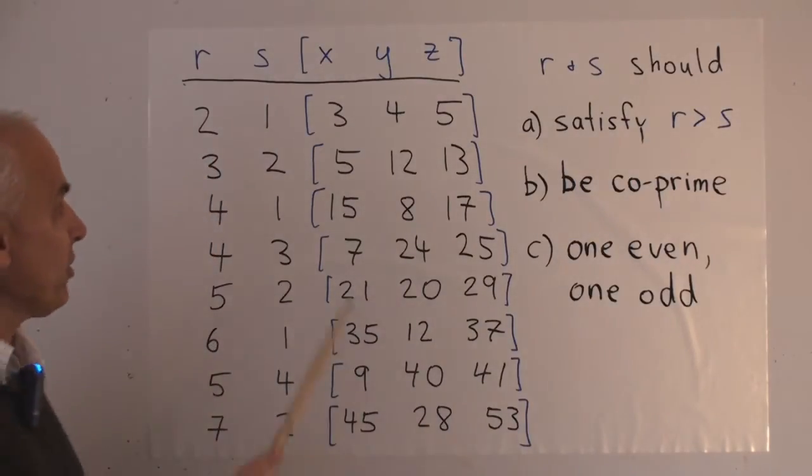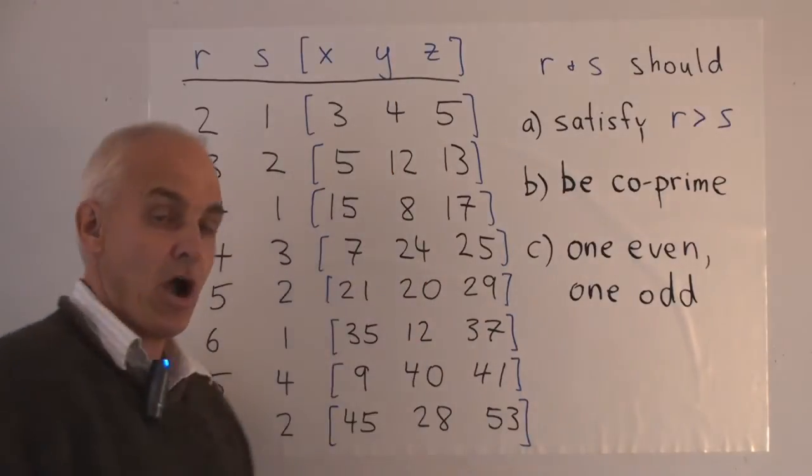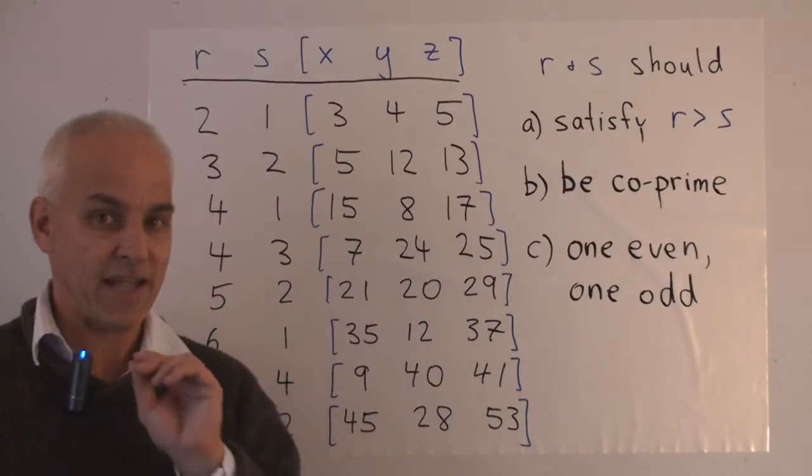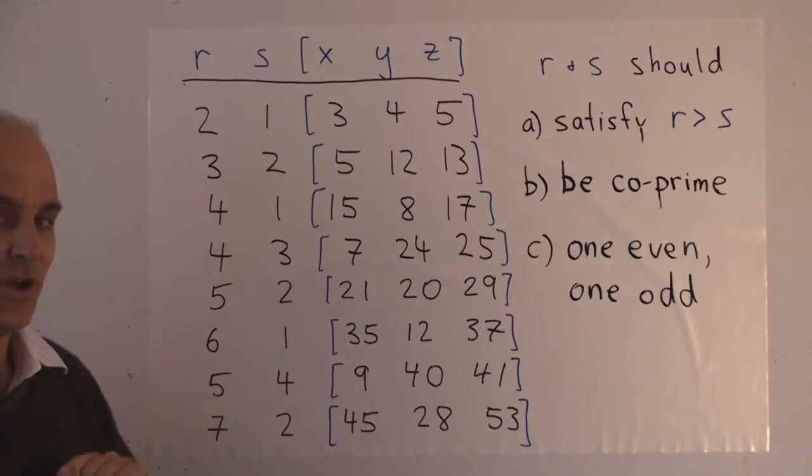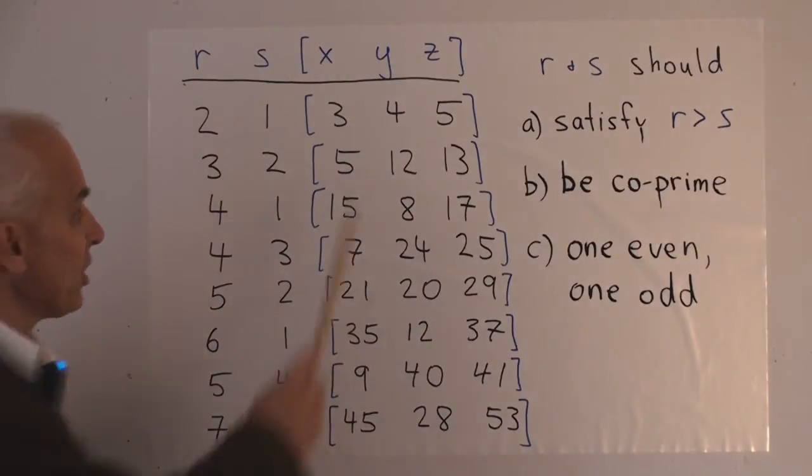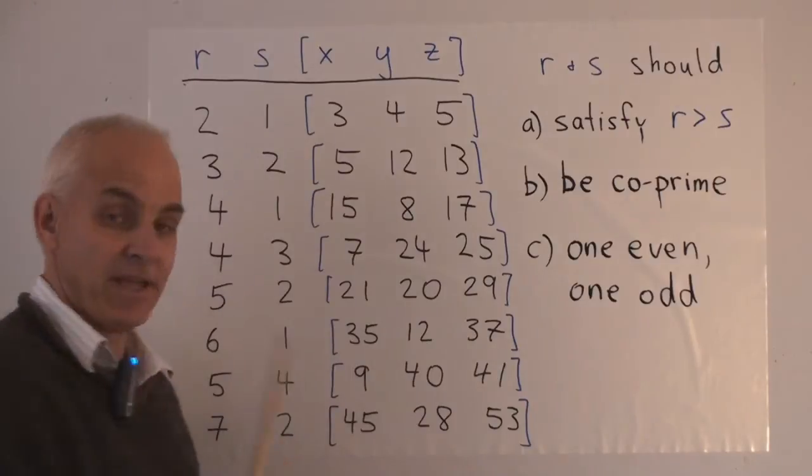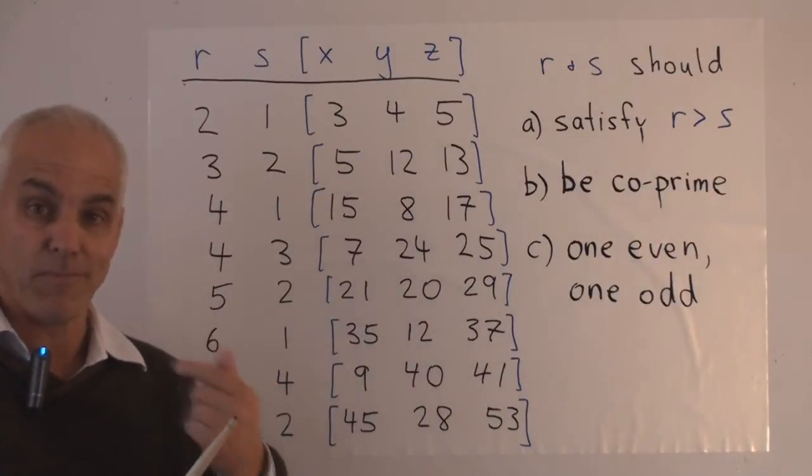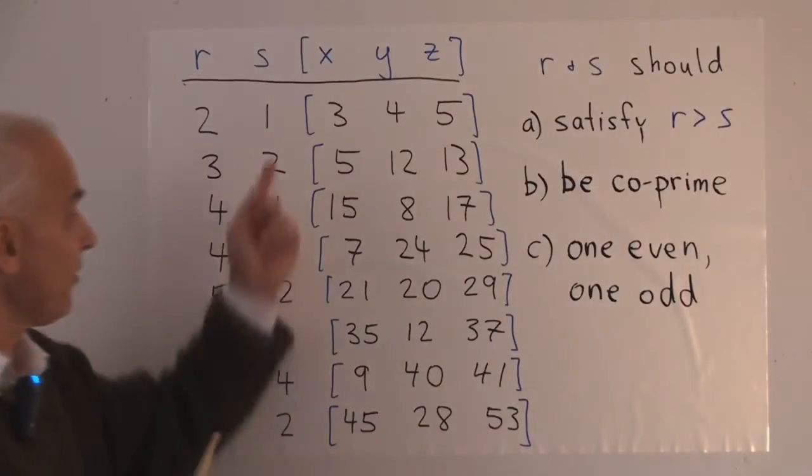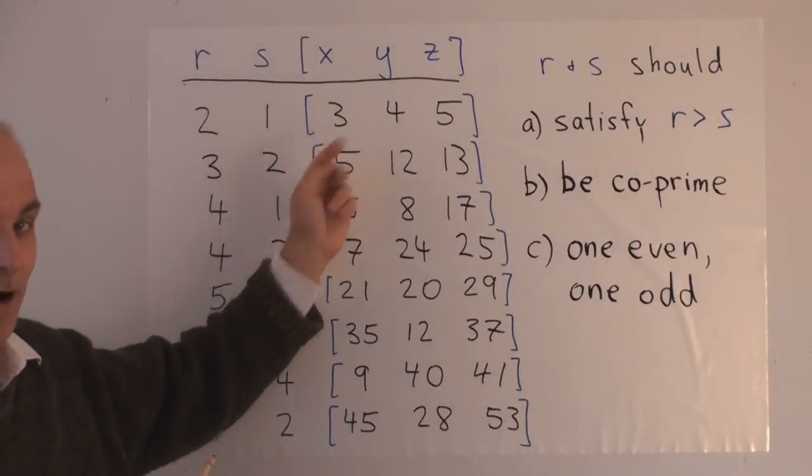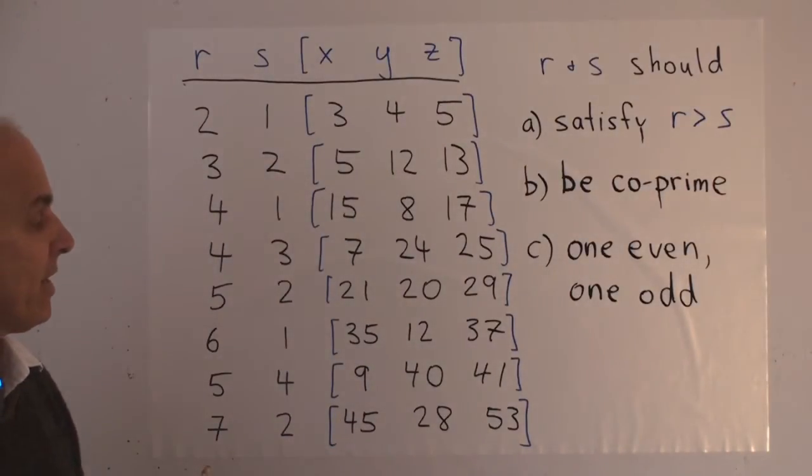Now, a comment. In order to guarantee that x, y, and z really are a reduced triple, that is they have no common factors, we need a few conditions on r and s. First of all, to guarantee that x itself is a natural number bigger than 0, we want r to be bigger than s, because it's r²-s², so r had better be bigger than s.